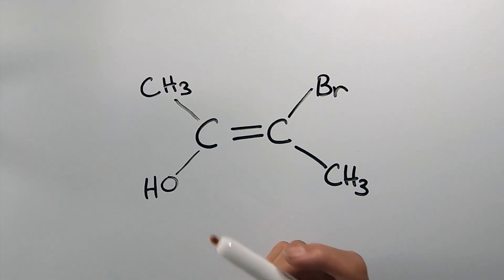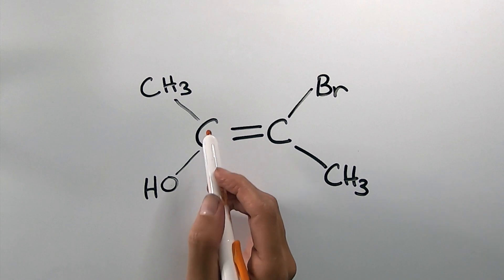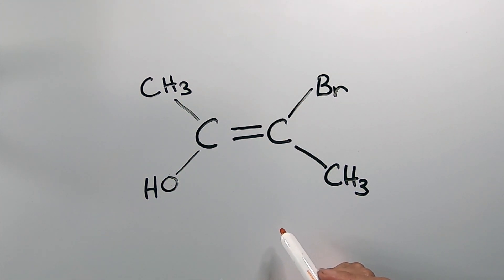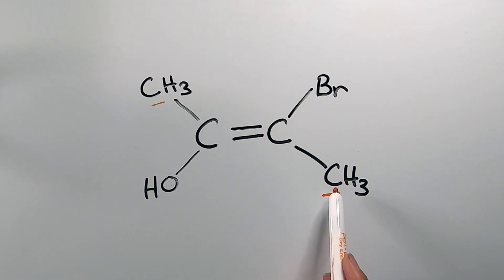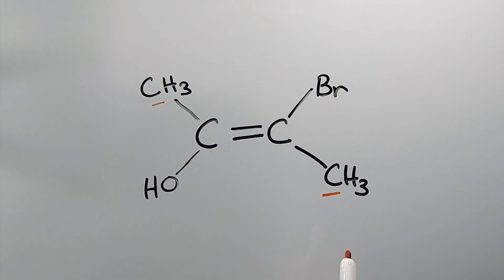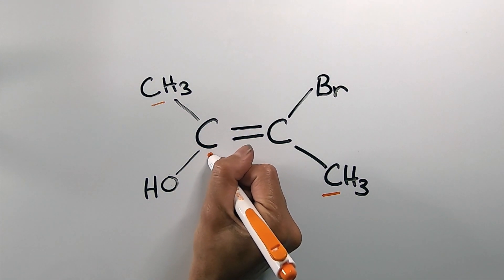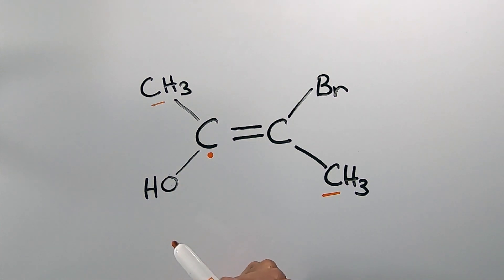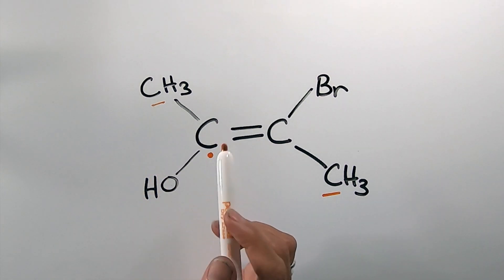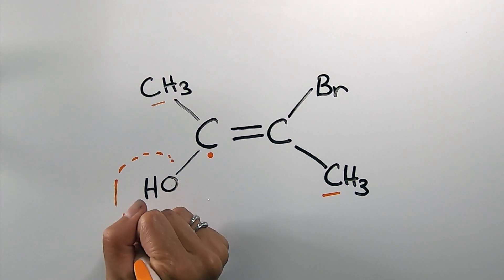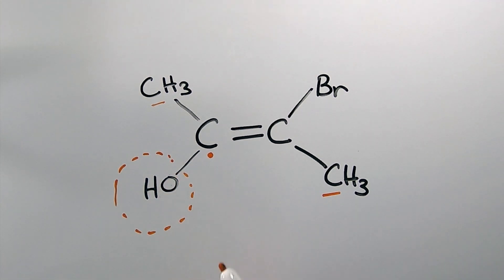Here's an example of a geometric isomer with double-bonded carbons, each with two substituents on it. The first thing to notice is that there are two of the same substituents — there are two methyl groups, one on each of the carbons — so we're going to be using cis-trans nomenclature. To determine whether it's cis or trans, start by looking at the left carbon and determine priority among its two substituents. There's a hydroxide group and a methyl group. The oxygen has a greater atomic number, therefore a greater electron cloud around it, which gives it priority.